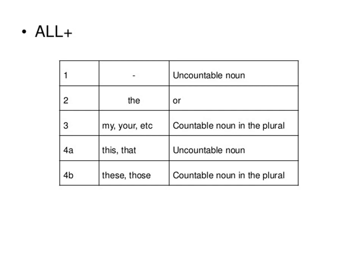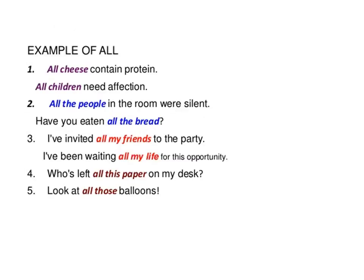All is also used as both indefinite numeral and quantitative determiner. If all is used before an uncountable noun, it works as a quantifier; if used with a countable noun in the plural, it is an indefinite numeral. 'All cheese contains protein' — uncountable, quantifier. 'All children need affection' and 'all the people in the room were silent' — countable, indefinite numeral. 'Have you eaten all the bread?' — uncountable, quantifier. If before countable — indefinite numeral; if before uncountable — quantifier.